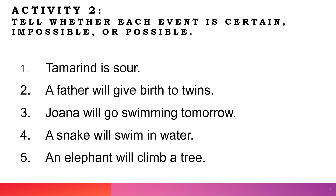Activity 2: tell whether each event is certain, impossible, or possible. The sun will rise tomorrow — it is certain. A father will give birth to a twin — that is impossible; only a mother can give birth. Joanna will go swimming tomorrow — that is possible because it's hot. A snake will swim in water — that's certain. An elephant will climb a tree — that's impossible.